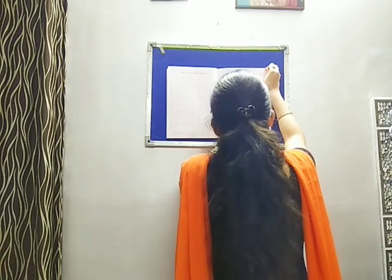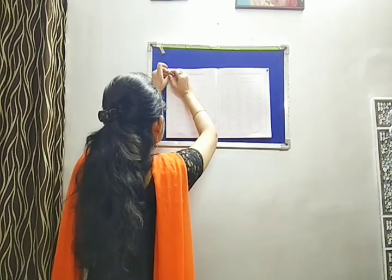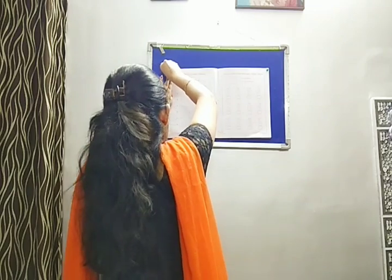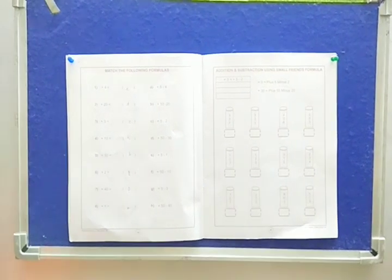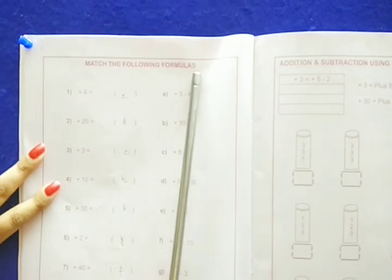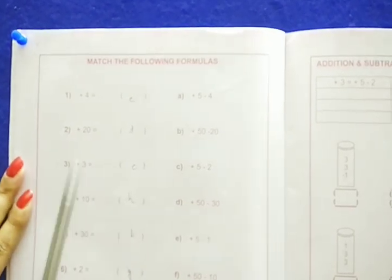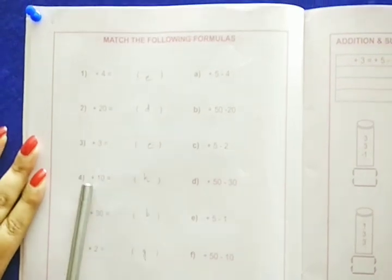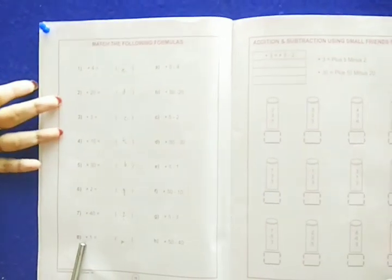In class 1 I don't know if you have done this process or not, but now you will be having these types of questions. Let me explain — come near, I will show you. Page number 18: the question says 'children, match the following formulas.' On the left side you will find 8 questions numbered 1 through 8, and on the right side are the formulas.